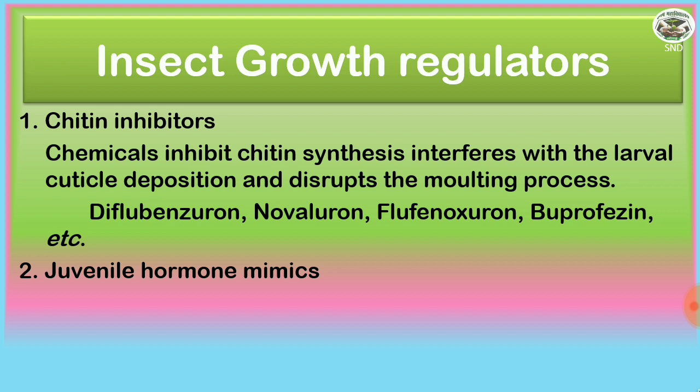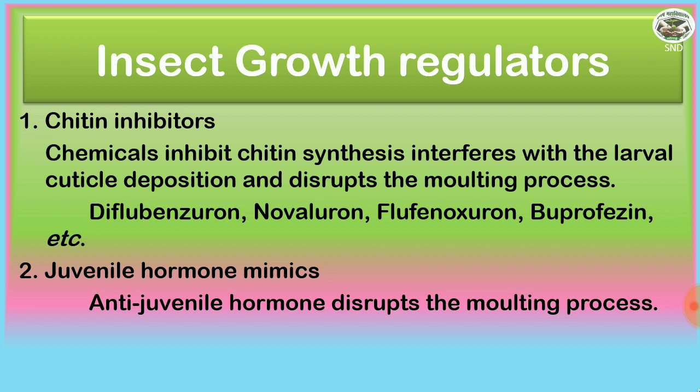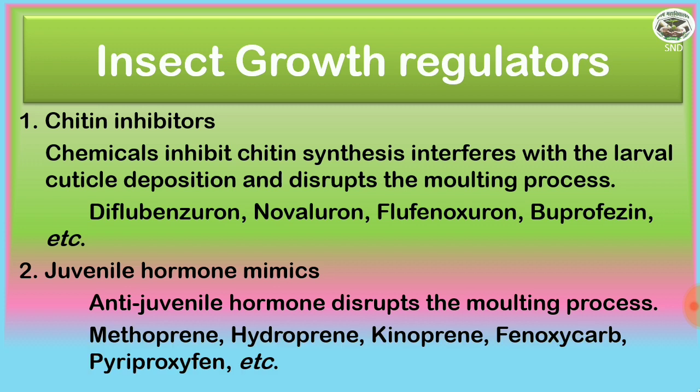The juvenile hormone mimics are the anti-juvenile hormone that disrupts the molting process. Examples: methoprene, hydroprene, quinoprene, phenoxycarb, pyriproxyfen, etc.